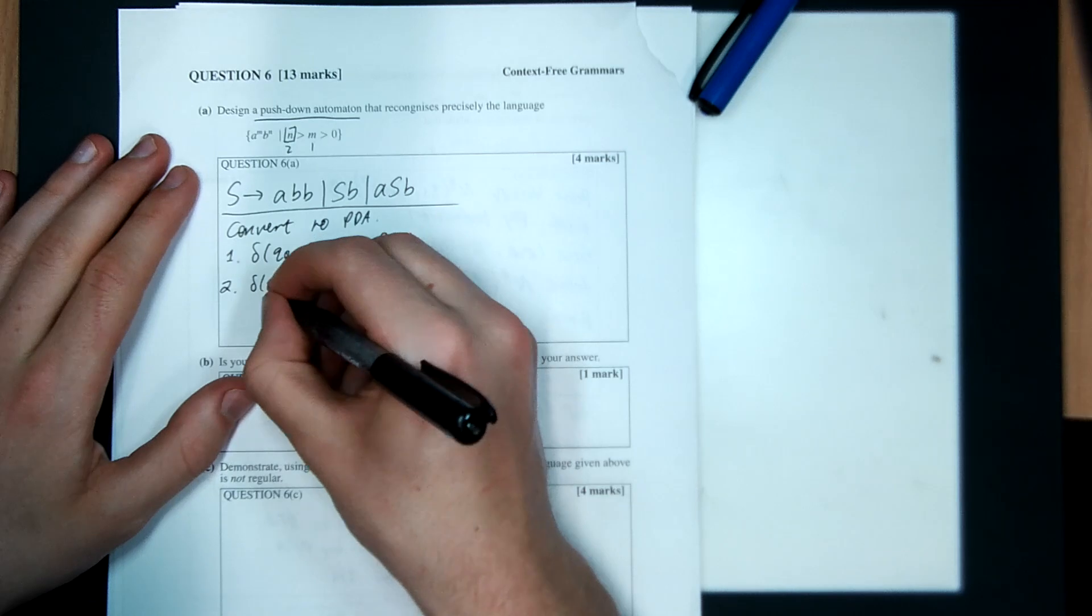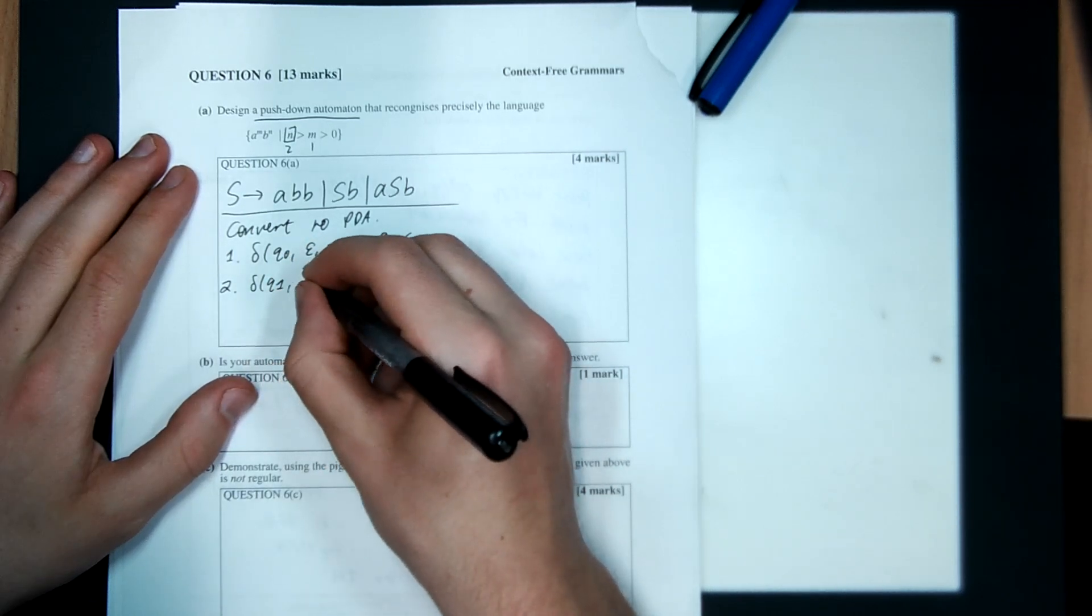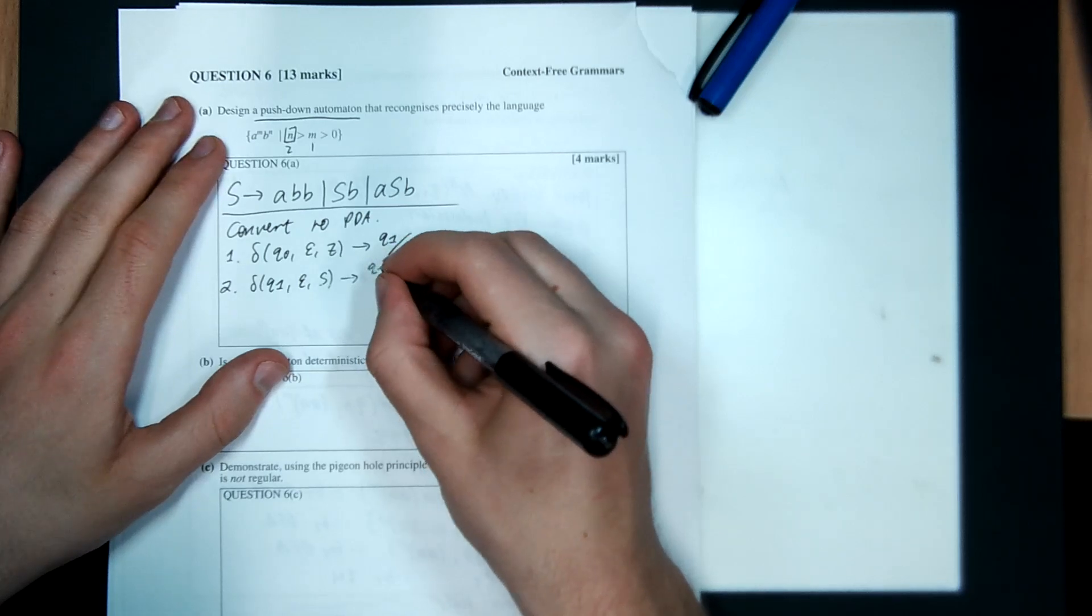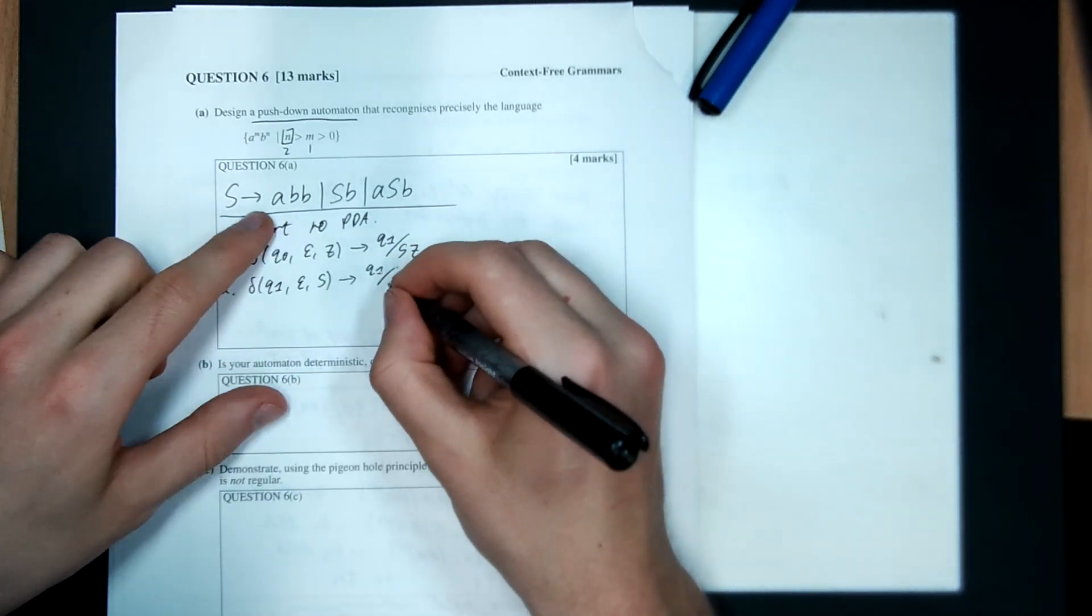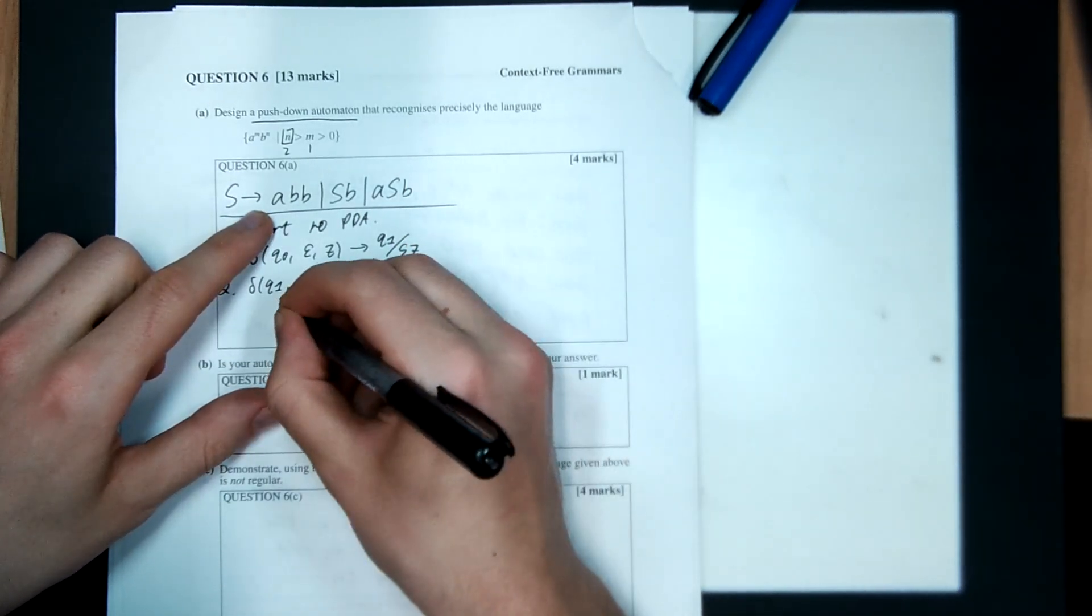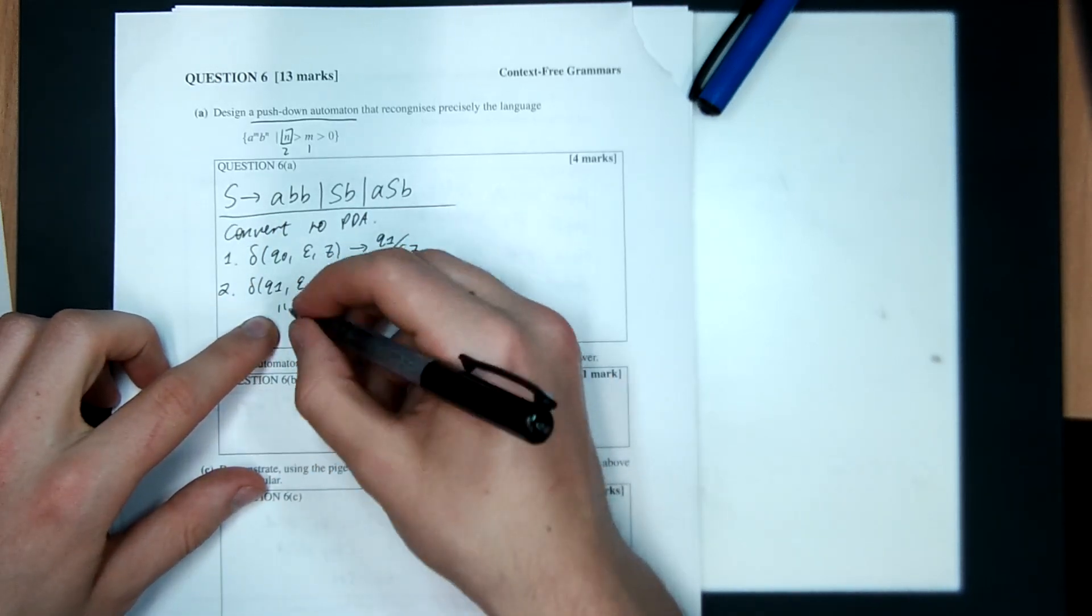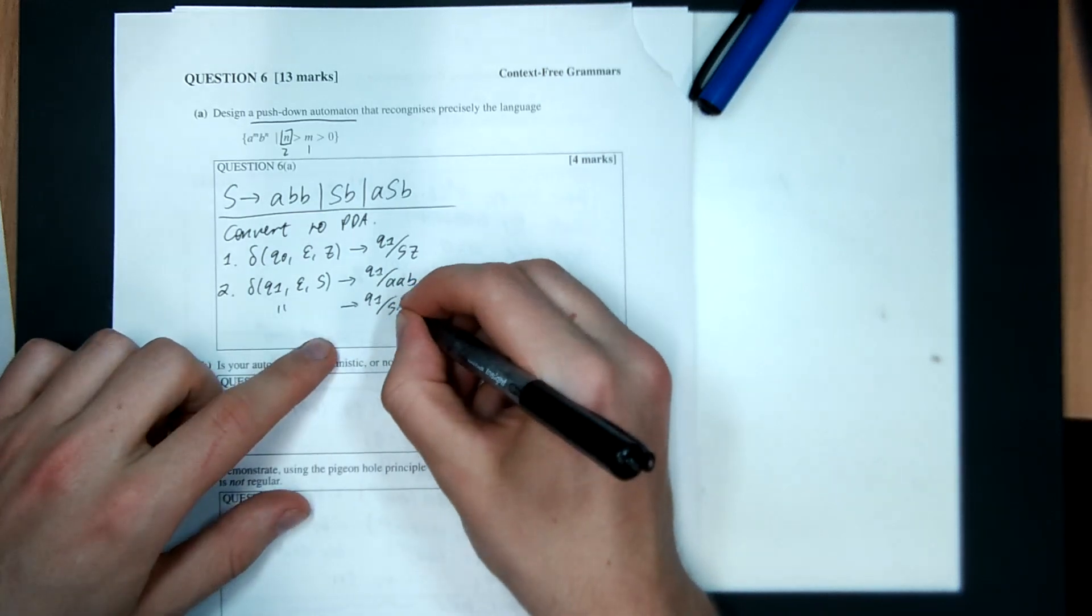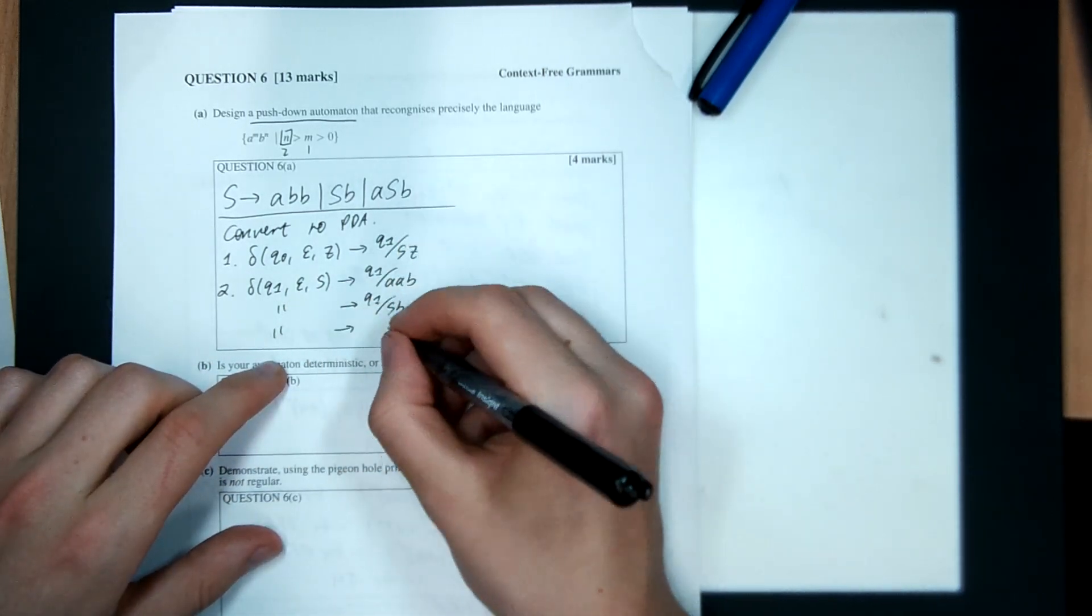Step two, expand non-terminals. So if I'm in Q1, ignore the input. If I see S, I can pop S and push A, A, B. Or, when I write these two dashes, I mean like the same thing again. Or I can push S, B. Or I can push A, S, B.